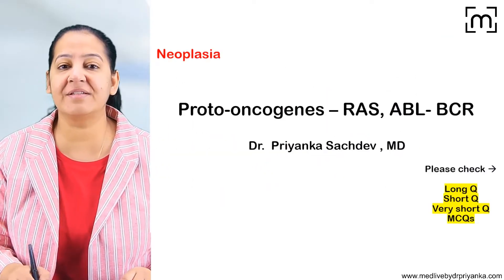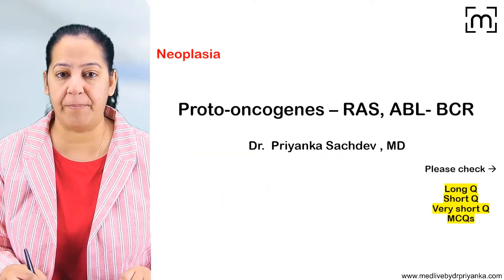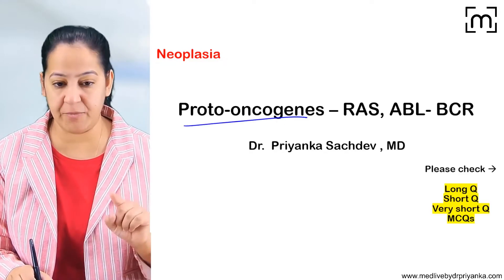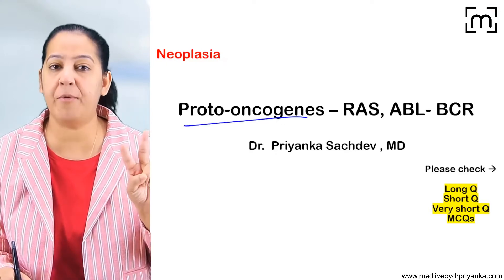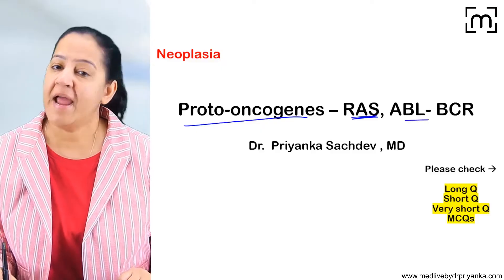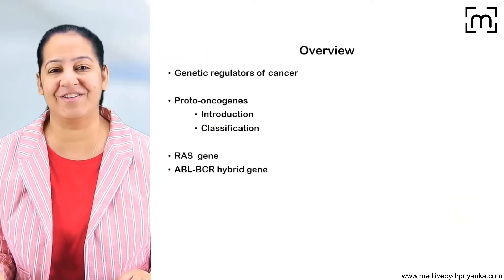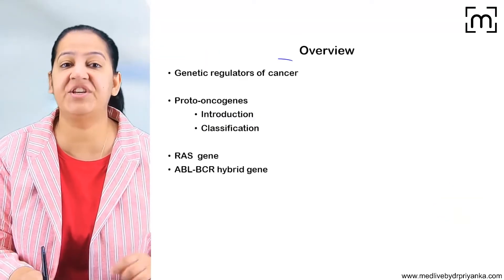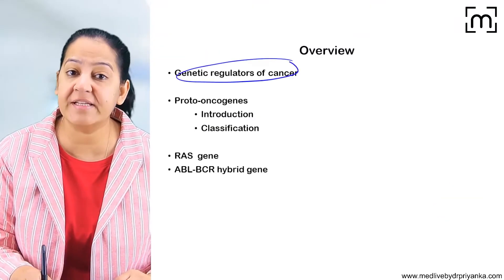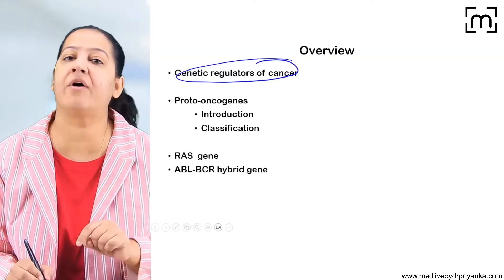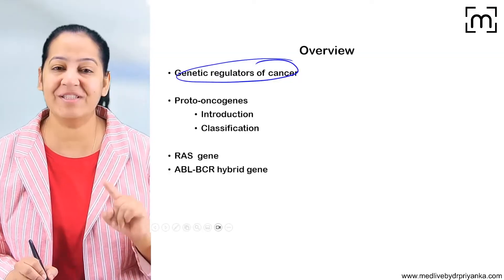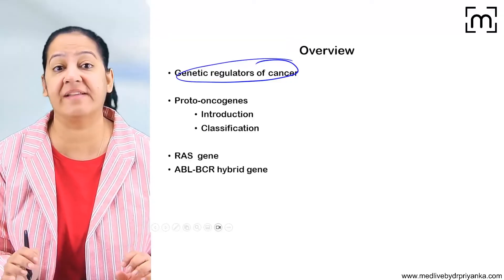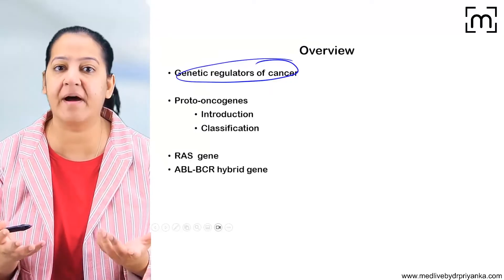We are starting the important topic of proto-oncogenes, in which I am going to discuss two important proto-oncogenes: RAS gene and ABL-BCR gene. First, I will let you know the various genetic regulators of cancer — proto-oncogenes is one of them. I will explain the genetic molecular mechanism of cancer, why cancer occurs.